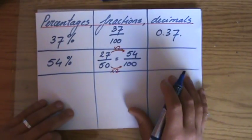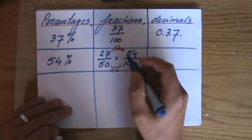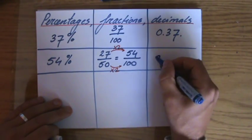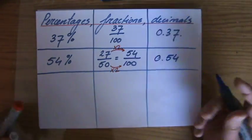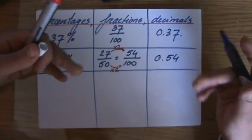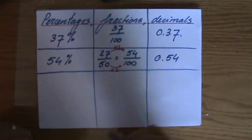And as a decimal, that will be, 54 over a hundred, 0.54 indeed. 54 hundredths. It's all connected, it's all related.